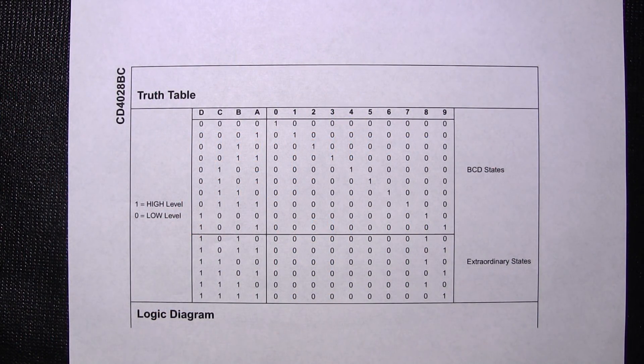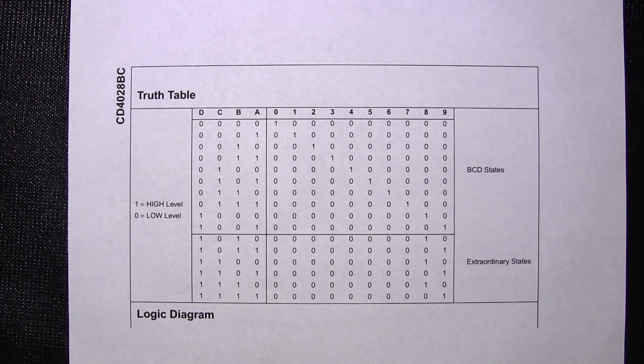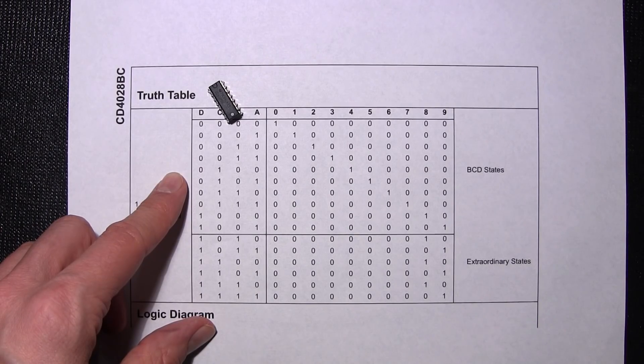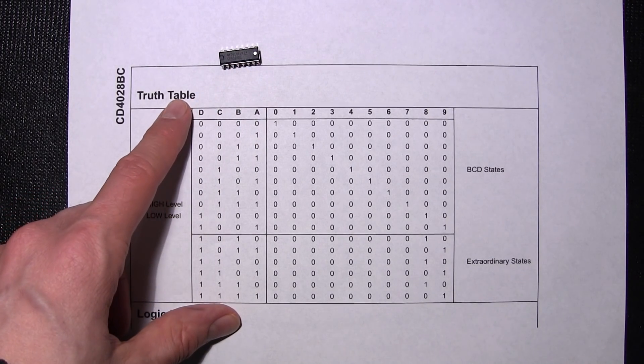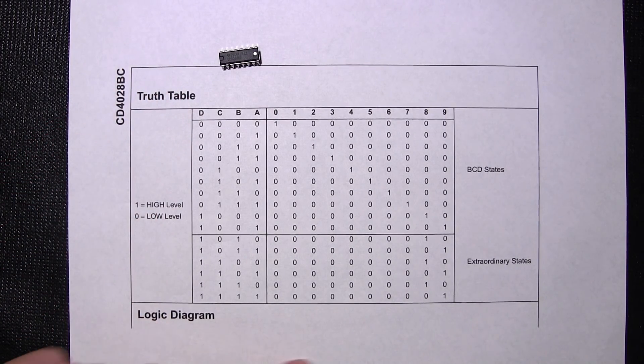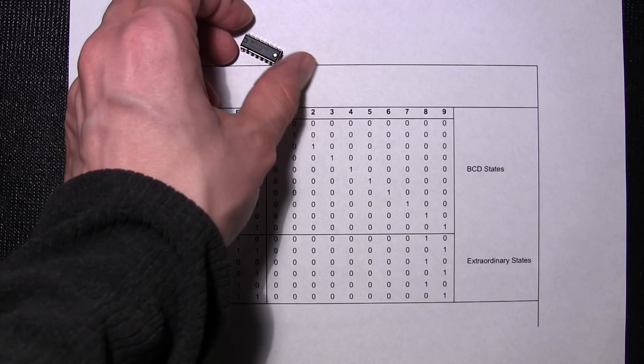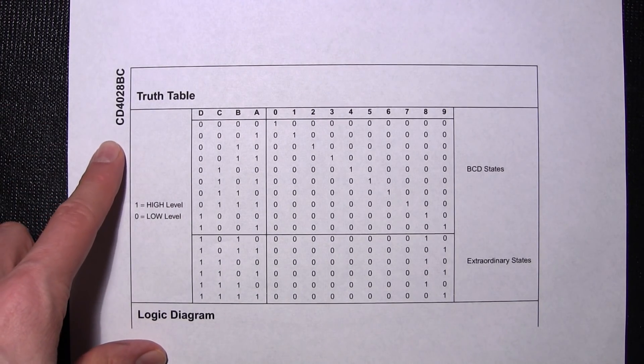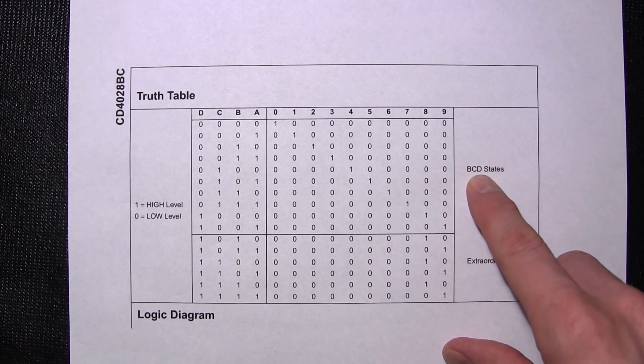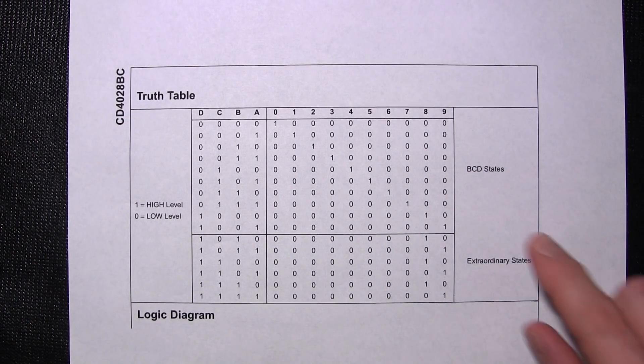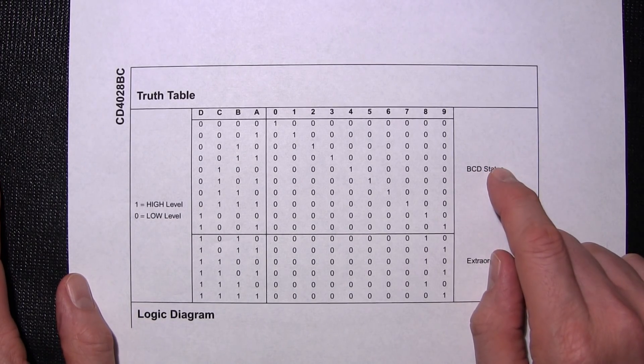This is a pretty standard looking logic diagram. This is for the CD4028 which is this IC right here. They also make this in a surface mount version which is quite a bit smaller. So this entire logic diagram is for this little IC. Now any of you that are Nixie tube people would probably recognize this number right away. This is a BCD to decimal decoder.